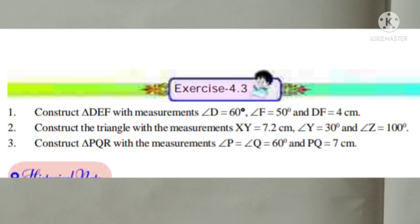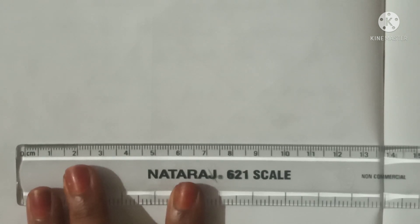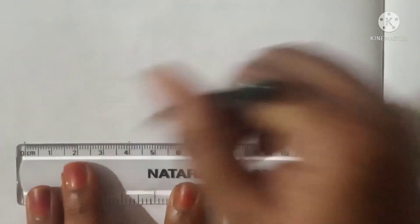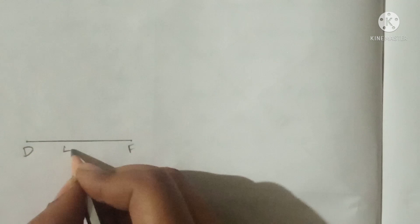Exercise 10.3, Question number 1. Construct triangle DEF with the measurements: angle D is equal to 60 degrees, angle F is equal to 50 degrees, and DF is equal to 4 centimeters. Firstly, let us draw DF line segment with 4 centimeters. Mark 0 and 4 cm, join these two points to draw the line segment DF measuring 4 centimeters.